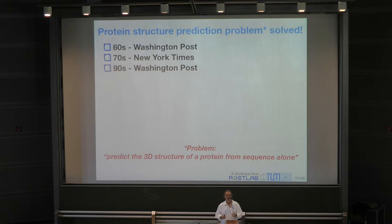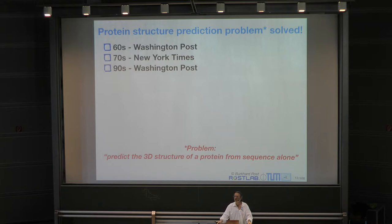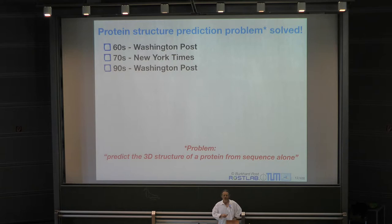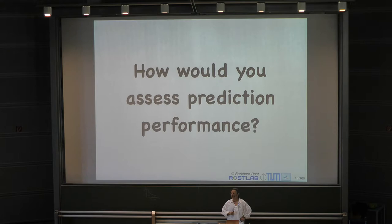In the 1960s a publication in the Washington Post said the protein folding problem had been solved. In the 1970s, the New York Times reported the same. Then again in the 1990s. Getting three decades of major newspaper coverage claiming the same problem is solved begins to suggest something is wrong with the story — you cannot solve the same problem three times in thirty years.